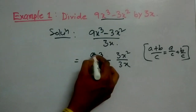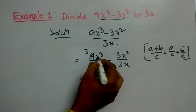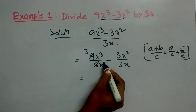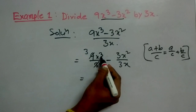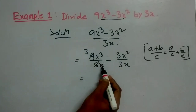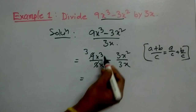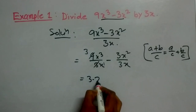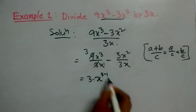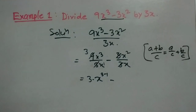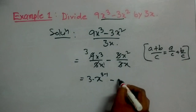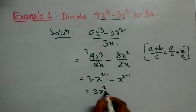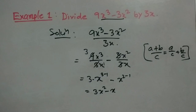Now this 3 and this 9 — this is 3. This is x cubed and this is x. Since the power of x in the numerator is greater than the power in the denominator, 3 will subtract 1. So this gives 3 and x to the power 3 minus 1. Here this 3 and 3 will be cancelled, giving minus x to the power 2 minus 1. So the answer is 3x squared minus x.